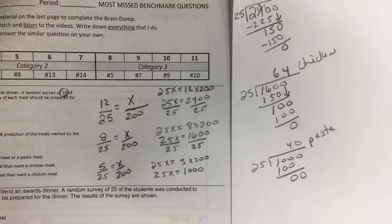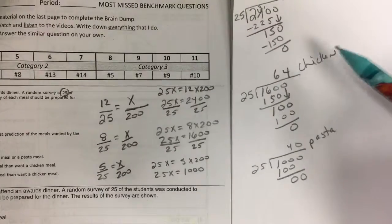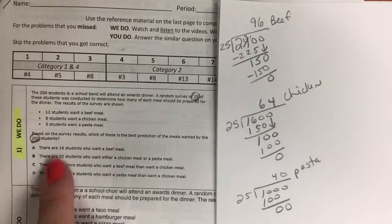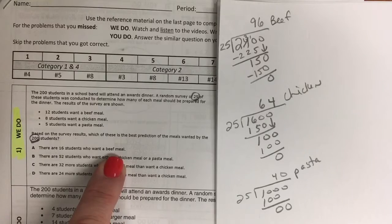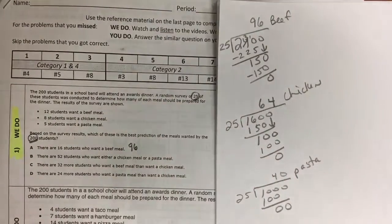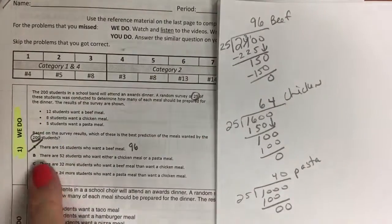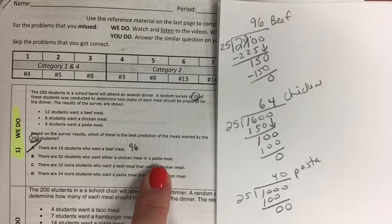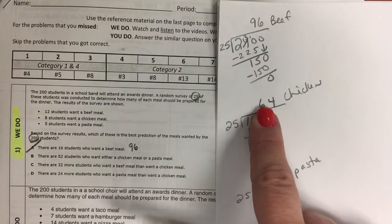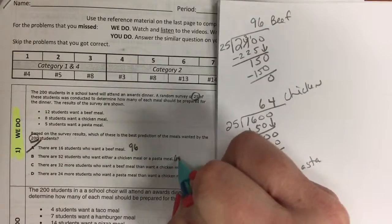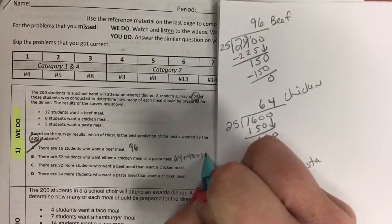So now I know how many out of the 200 want each thing, so I can go back to my answer choices. There are 16 students who want a beef meal. No, that's not correct because there's 96 students who want a beef meal. There are 52 students who want either a pasta meal. Well, chicken is 64, pasta is 40, and 64 plus 40 is 104. That's not 52.